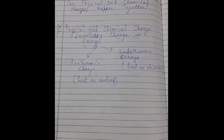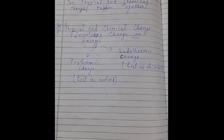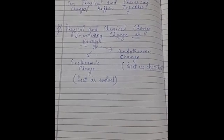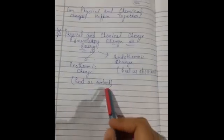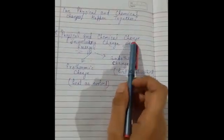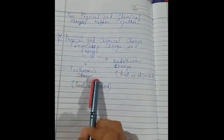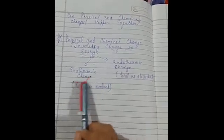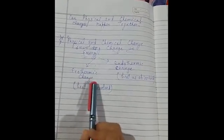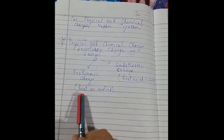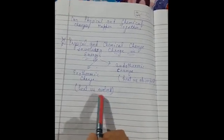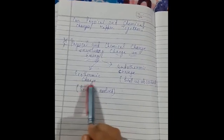The next topic is physical and chemical changes involving change in energy. On the basis of energy change, we can classify changes into two categories: exothermic changes and endothermic changes. Exothermic changes are those which involve the evolution of heat — changes in which heat is evolved or given out are called exothermic changes.